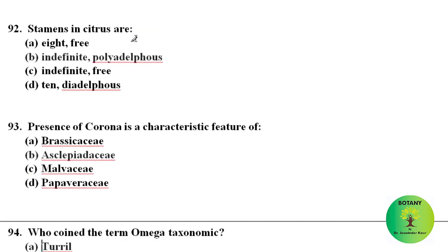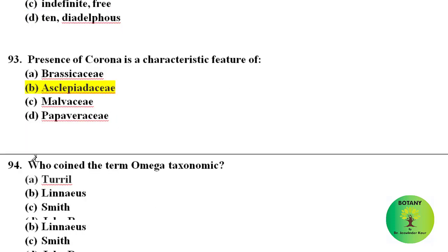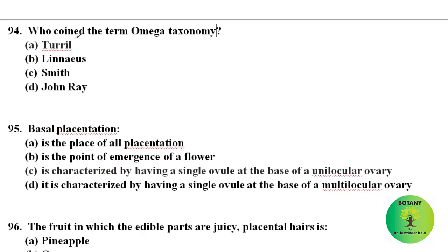Stamens in Citrus are indefinite in number and polyadelphous, occurring in many groups. Presence of corona is a characteristic feature of family Asclepiadaceae, but now according to APG, Asclepiadaceae is treated as a subfamily within family Apocynaceae.